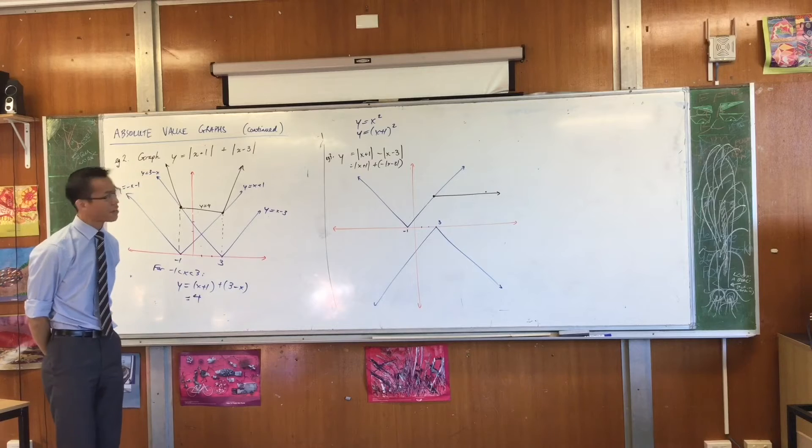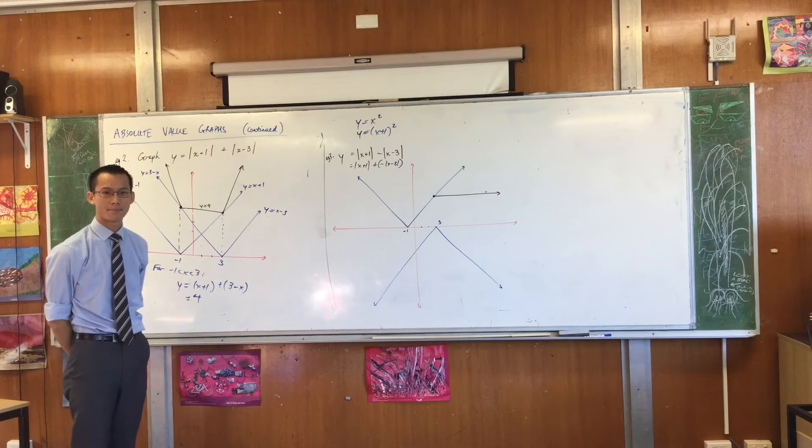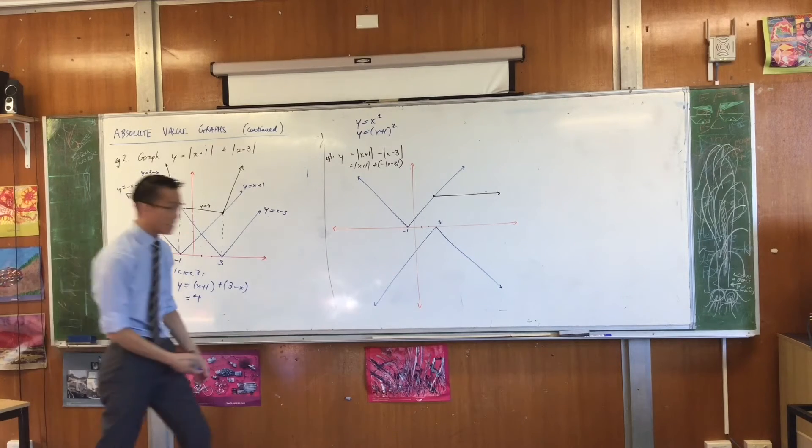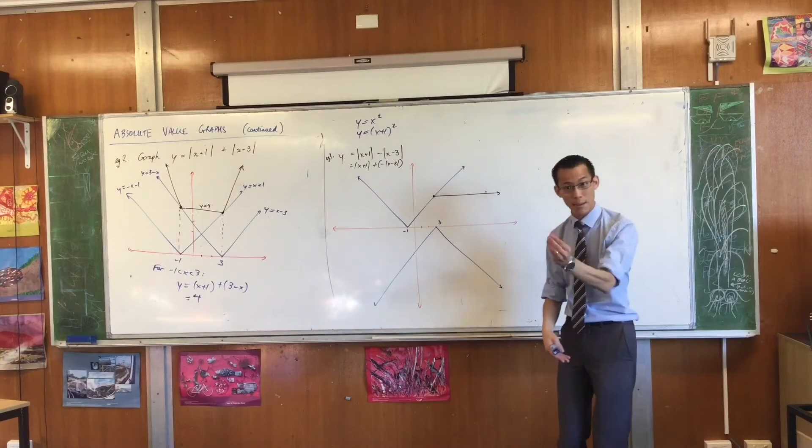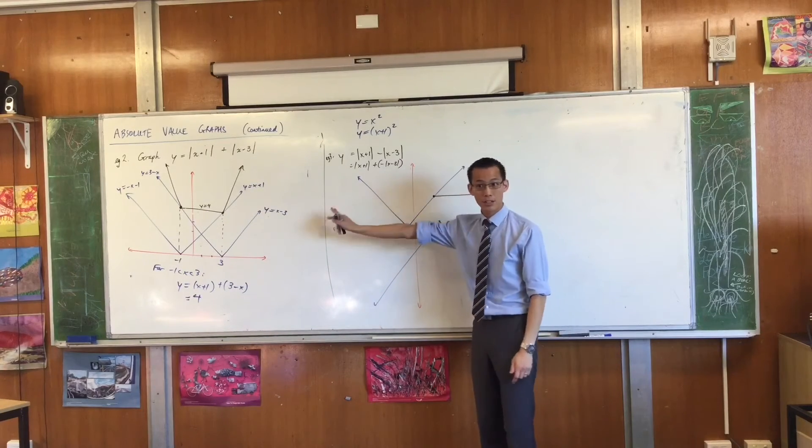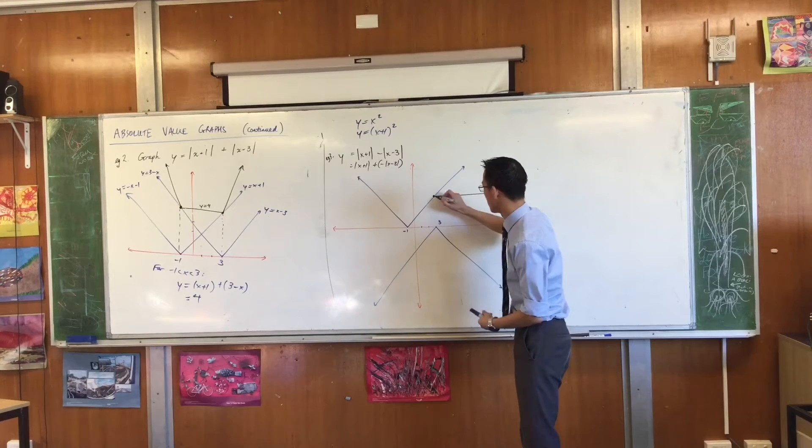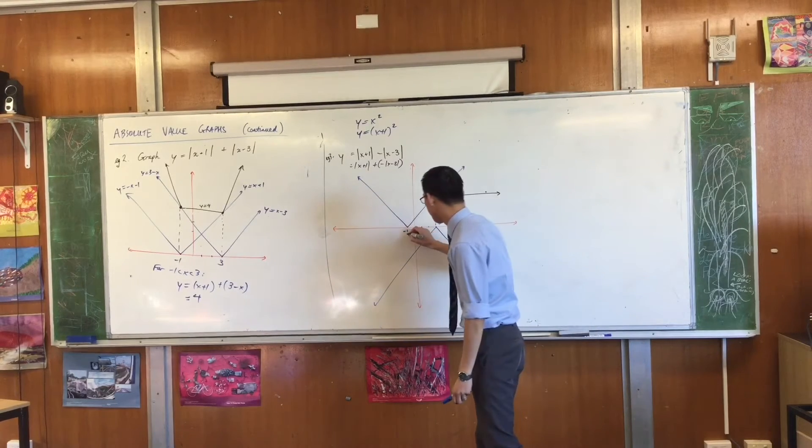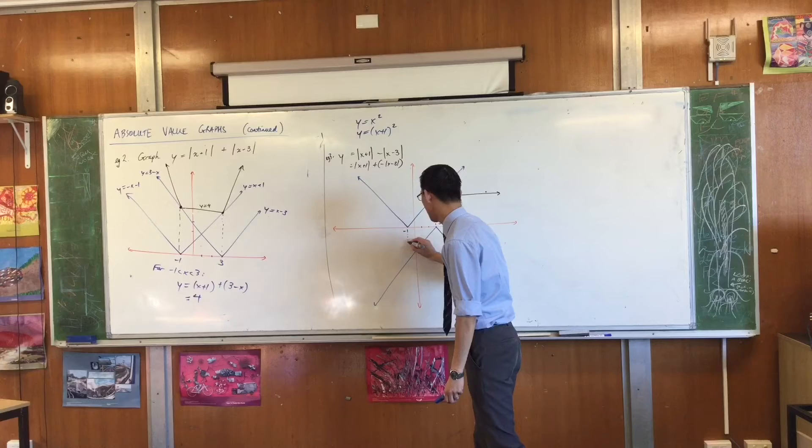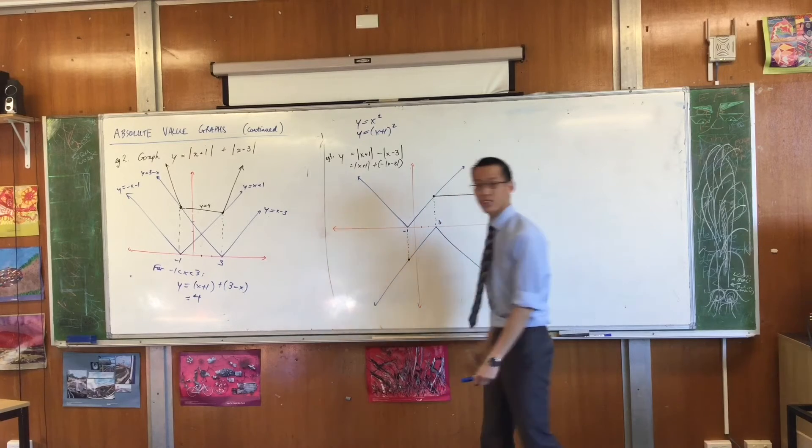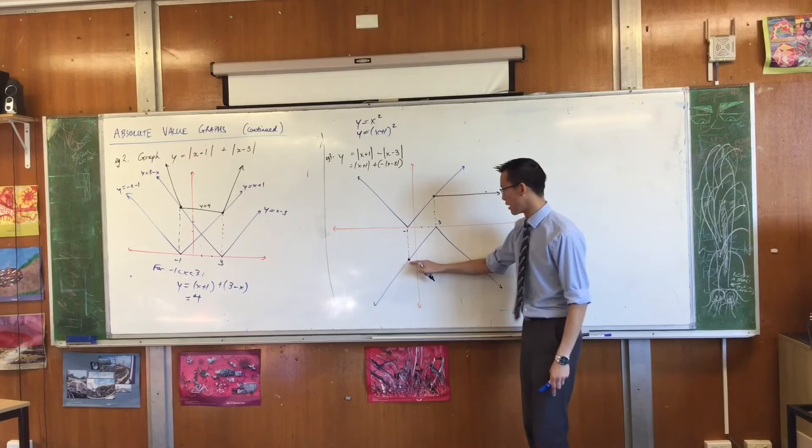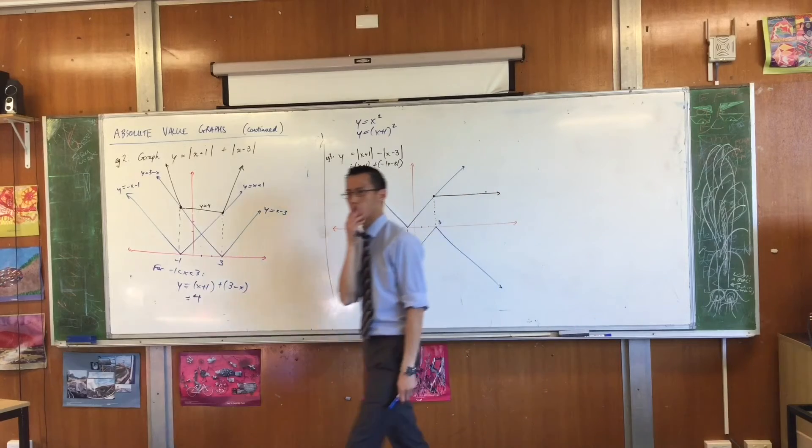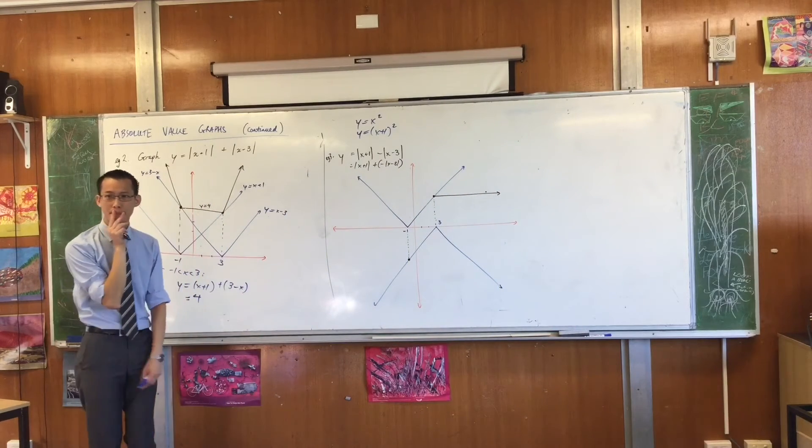Would someone like to suggest to me another region, another domain, to look at now that I've looked at the right of x equals 3? Where else could I look? Yeah, Michael? The left of x equals negative one. Yeah, fantastic. So, you can see I've got more or less the same scenario happening on the opposite side of the graph. Do you see that? If I draw my vertical line at x equals negative one, it's going to be over there. Can anyone tell me why it starts from here and not there? Why am I drawing it this way and not that way?